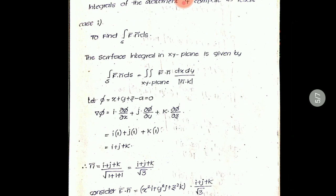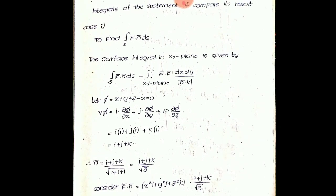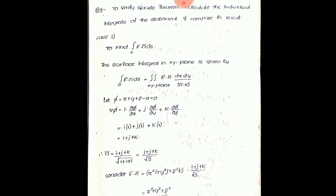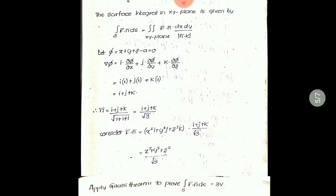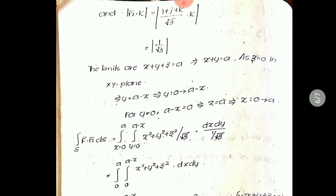F̄ is already given. For N̄, from the scalar function X + Y + Z − A = 0, calculate the gradient vector, which is î + ĵ + k̂. The unit normal vector N̄ is (î + ĵ + k̂) / √3. To substitute into the integral, calculate F̄·N̄, which gives (X² + Y² + Z²) / √3. Then |N̄·k̂| = 1/√3.